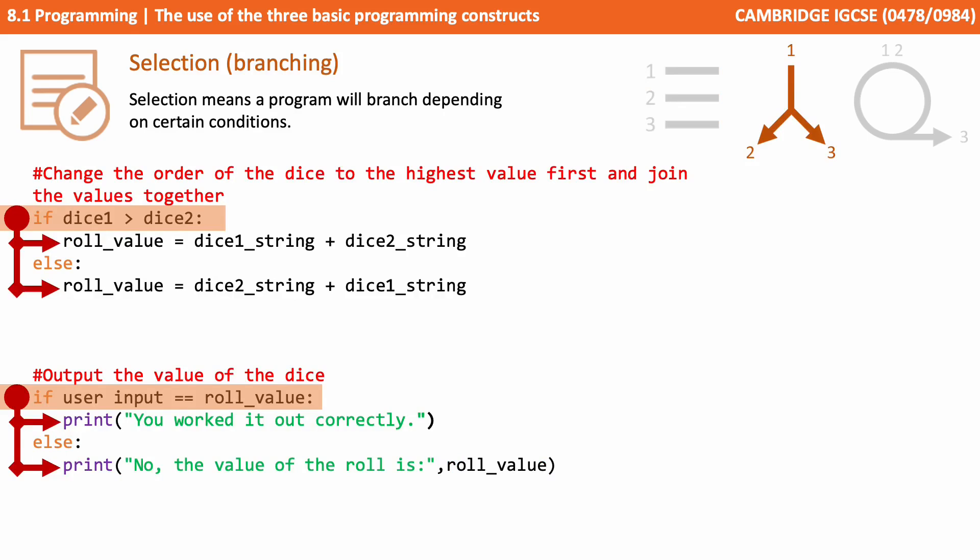The next programming statement is known as selection or branching. Selection means a program will branch depending on certain conditions. So if we look at this first extract of code, it says if dice one is greater than dice two. Well, that's a boolean expression that has to be evaluated to either true or false. If dice one is greater than dice two, if it's true, we branch and do the first line of indented code. If it's not, if it's false, then we branch and instead we execute the line of code under the else.